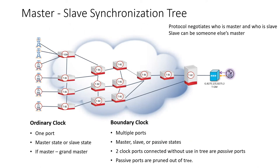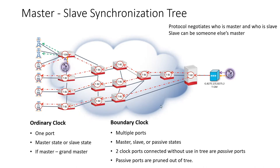In networking, we never want loops, so we're going to have one grand master — the clock that is keeping the time and propagating it out to the entire network. We want all devices to have the same time as this grand master clock. So the grand master becomes the head of a tree, and we forward the timing traffic through that tree. While this is a mesh network with many connections, we really forward the traffic through the tree itself.